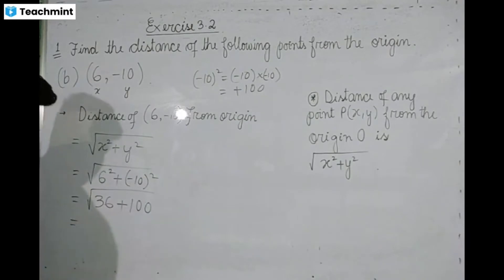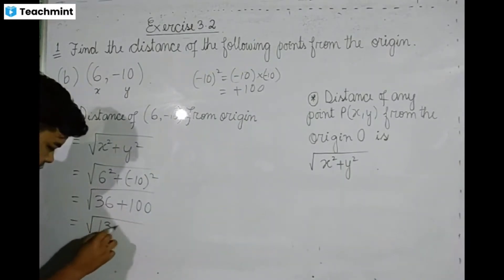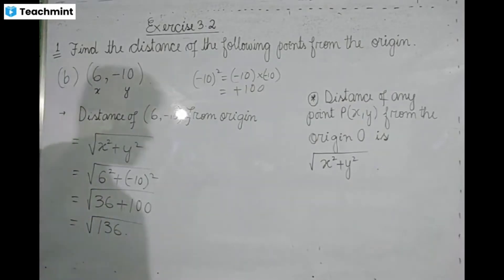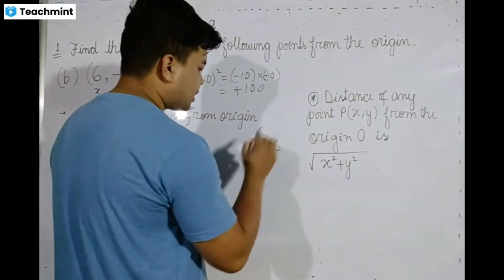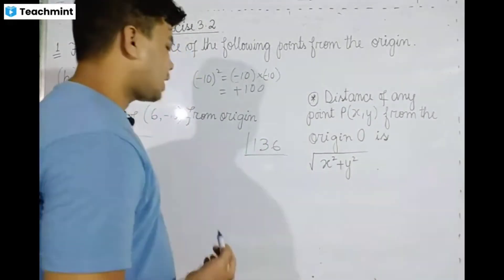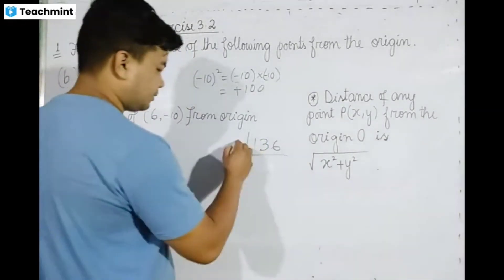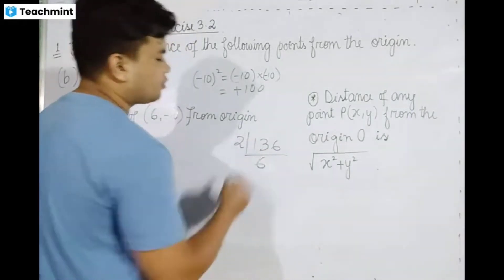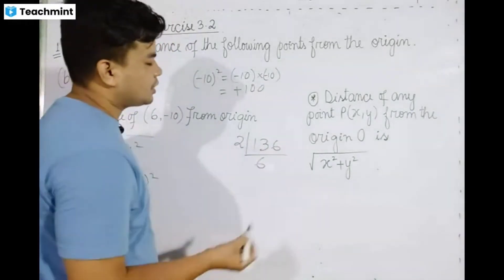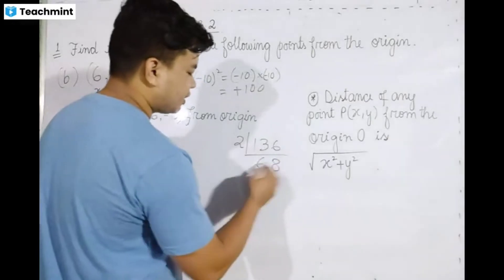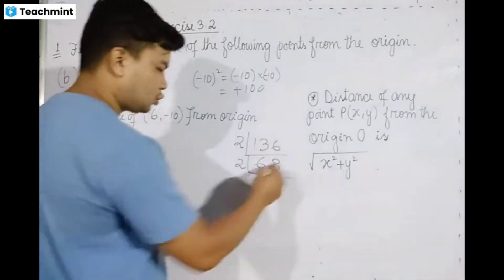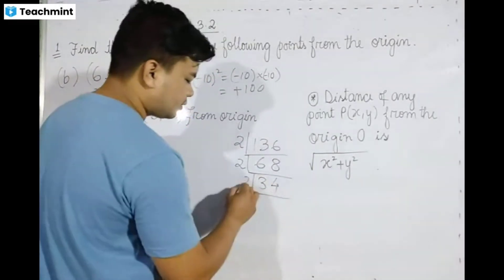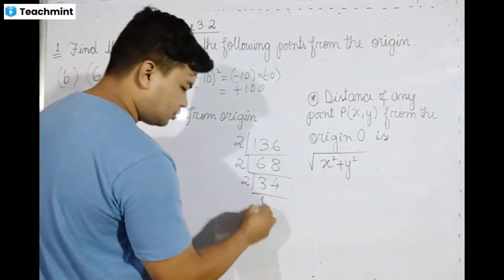We have root over 136. Now we need to prime factorize 136. Dividing by 2: 136 divided by 2 is 68, 68 divided by 2 is 34, 34 divided by 2 is 17.